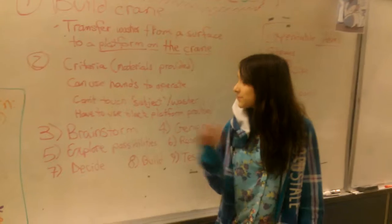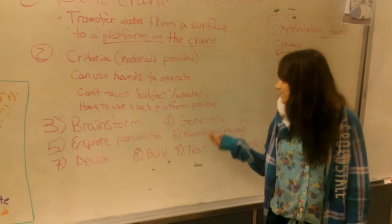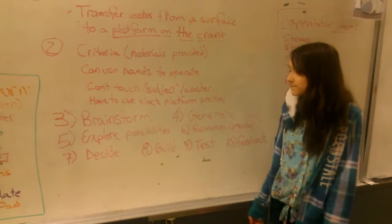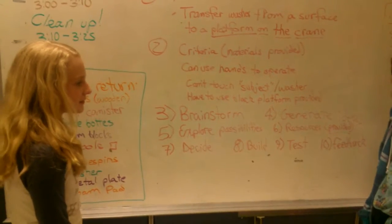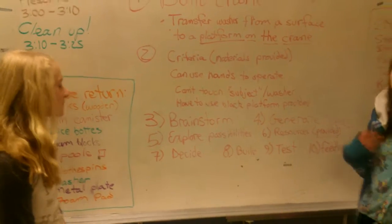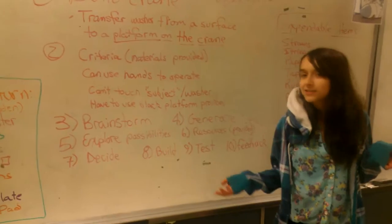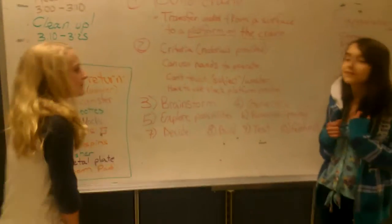Number three, we had to brainstorm and generate ideas. Number five, we explored our possibilities and determined our resources. And number seven, we decided and then we built it. And then we tested it and promoted it and got feedback.